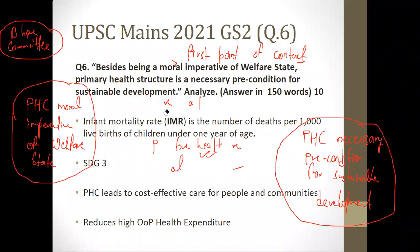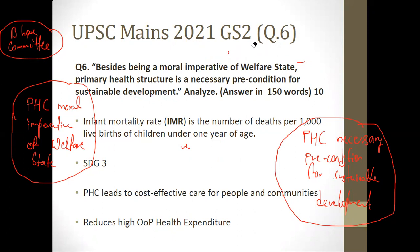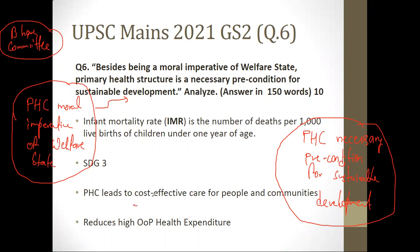The first heading is: PHC as a moral imperative of welfare state. The first point is that PHC leads to cost-effective care for people and communities. The second point is about the vicious cycle of poverty: if you don't have proper PHCs, it creates a vicious cycle — poverty leads to low productivity, low skills, low income, which again leads to poverty.